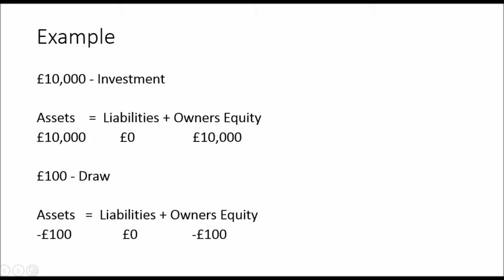If the owner draws £100 out of the business for personal use, the asset will go down — let's say the money was taken from the bank account. That asset has decreased and that has an impact on owner's equity. Don't think this is the capital account; it just has an impact and brings owner's equity down.